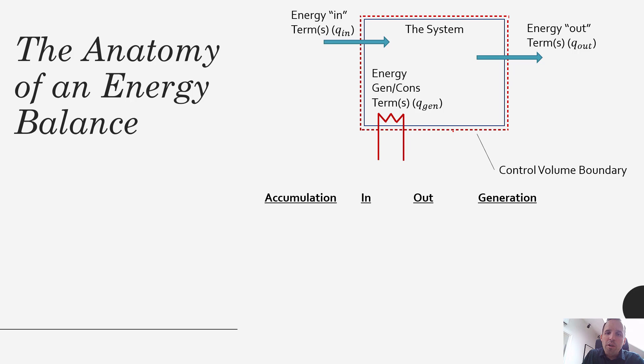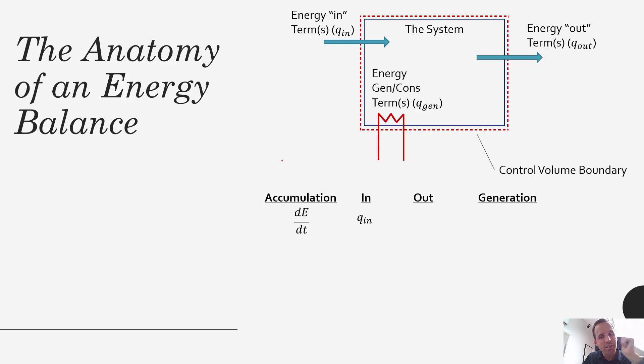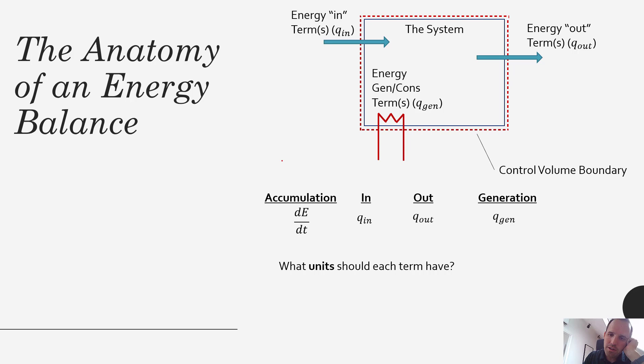In a particular system, your accumulation term might look like dE/dt, where E represents the total amount of thermal energy in the system — that could also be dU/dt. You can have multiple in terms and multiple out terms, plus a generation term. I want you to think about what units each term should have. If you want to pause and think about it, go ahead.